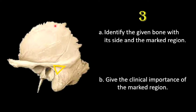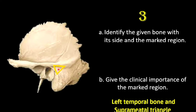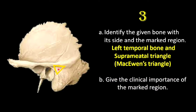The next question: identify the given bone with its side and the marked region. This is the temporal bone, left side. The marked region is the suprameatal triangle — a small depression at the posterior superior part of the external auditory meatus. It is bounded above by the supramastoid crest, in front by the posterior margin of the external auditory meatus, and behind by a vertical tangent to the posterior margin of the meatus.